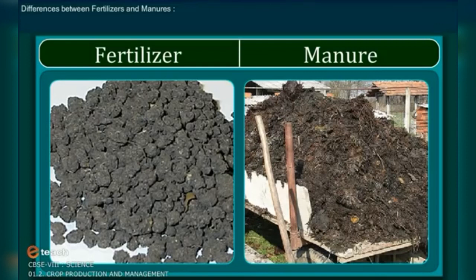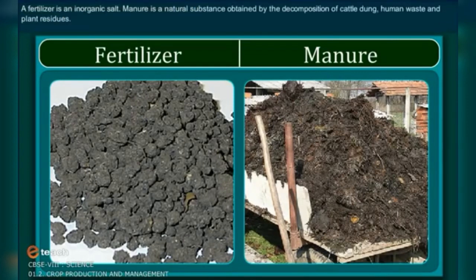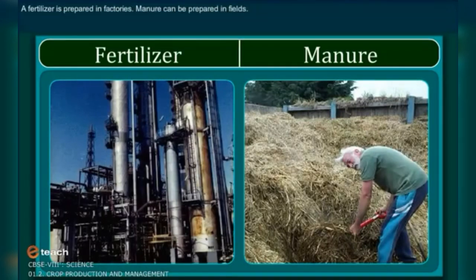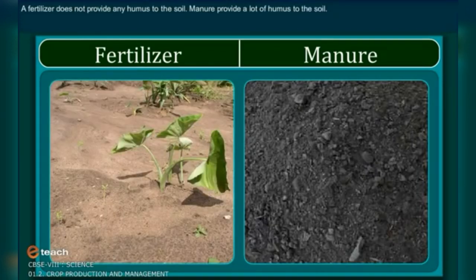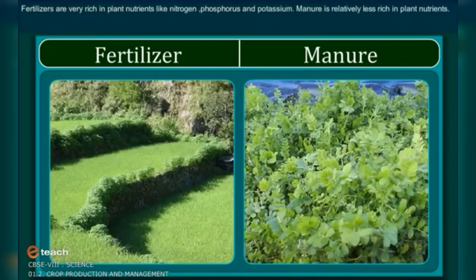Difference between fertilizers and manure. A fertilizer is an inorganic salt, prepared in factories, and does not provide any humus to the soil but is very rich in plant nutrients like nitrogen, phosphorus, and potassium. Manure is a natural substance obtained by the decomposition of cattle dung, human waste, and plant residues. It can be prepared in the fields, provides a lot of humus to the soil, but is relatively less rich in plant nutrients.